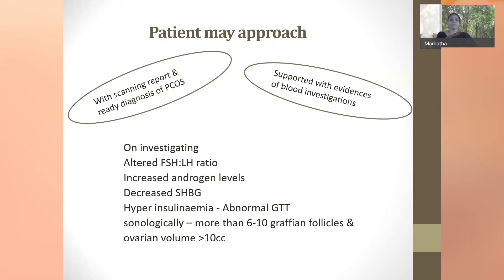Investigation findings in PCOD include an altered FSH-to-LH ratio greater than 1:3, increased androgen levels, decreased sex hormone binding globulin, hyperinsulinemia, and abnormal GTT. Sonologically, more than 6 to 10 Graafian follicles are seen, with total ovarian volume above 10 cc — and cases up to 40 cc are observed, beyond which it is considered an ovarian cyst rather than polycystic ovarian disease.